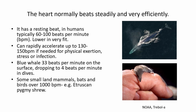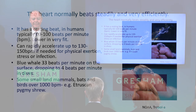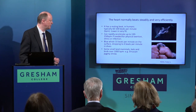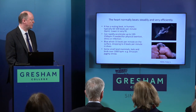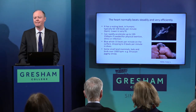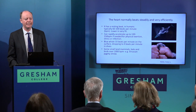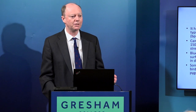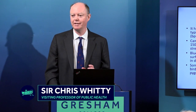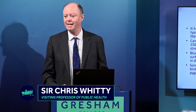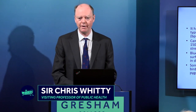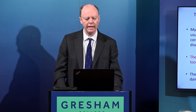Blue whales, which are very large, can go down to four beats per minute when diving, whereas the Etruscan pygmy shrew can have over a thousand beats per minute at rest. So the heart can essentially set its rate to the animal it's in, and in us that's obviously humans, so that's the rate we have: between 60 and 100 at rest.